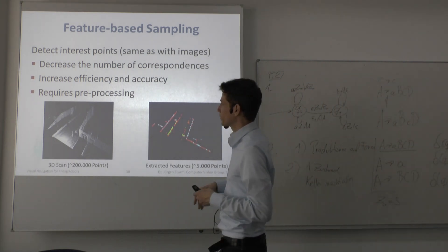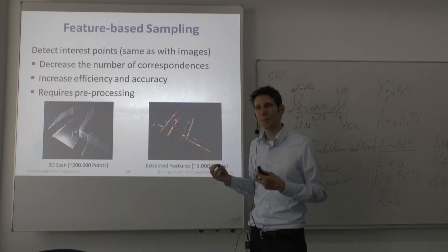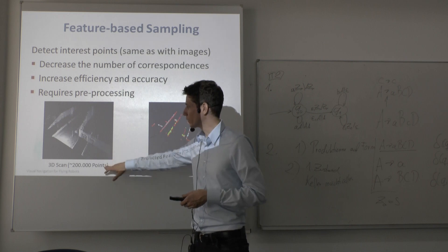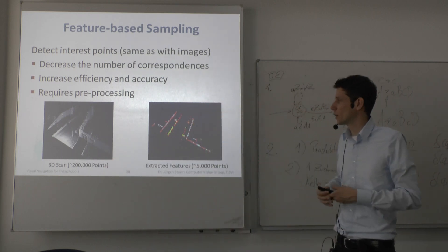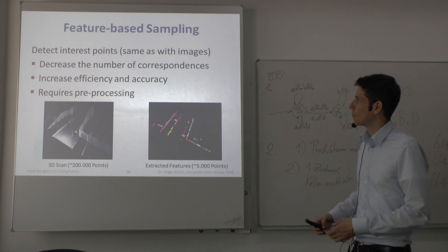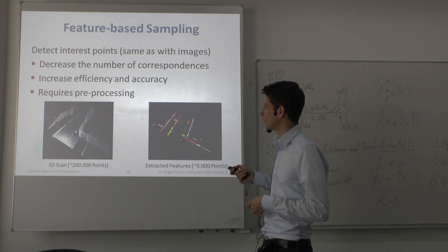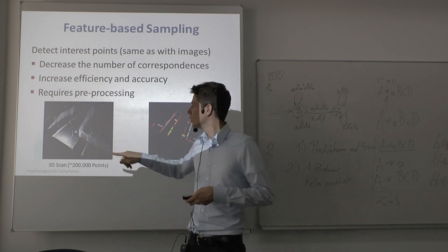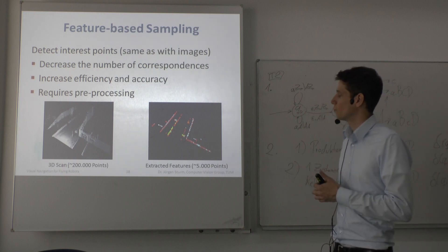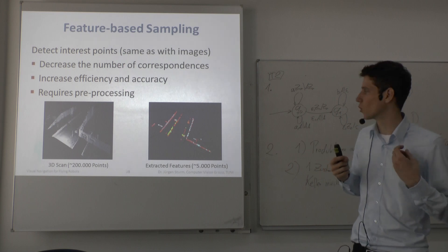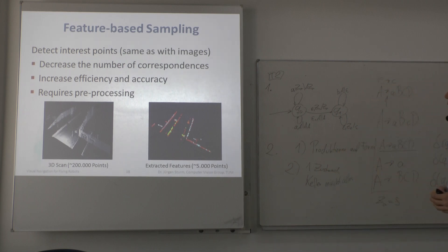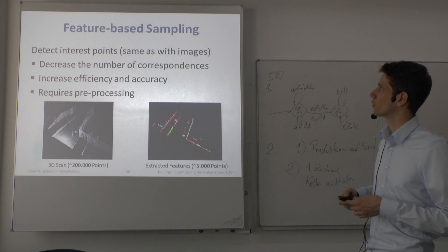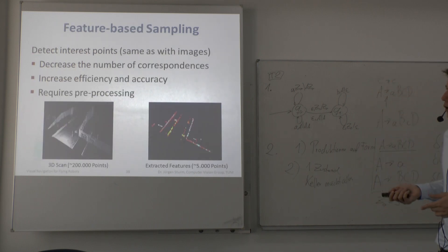3D scans can be pre-processed by extracting interest points. For example, a point cloud of 200,000 points might be too large for the robot's computer. You can reduce the count by extracting features — points where the curvature changes a lot, or specific properties like lines or corners in the 3D point cloud. The advantage is fewer points, but pre-processing costs time. There is a trade-off, and you lose a little accuracy by removing points.